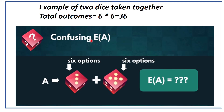Now let's take one example. Suppose we have rolled two dice together. The total number of outcomes will be 36 in this case — six options on one die and six on the other. If we calculate expected value here, it will be difficult and confusing because sometimes we may obtain an expected value in fractions, which is not possible since all the numbers on a die are whole numbers. So in that case we will draw a frequency table.